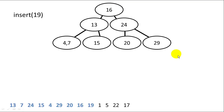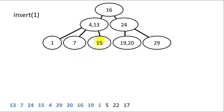Next we insert 19 — it's greater than 16 and less than 24, so it goes next to 20. We sort those and 19 is inserted. Then we insert 1, which goes on the far left next to 7. We sort those, but now we have 3 values, so we promote the middle value, 4, and split 1 and 7 into children. Next we insert 5 — it's between 4 and 13, so it goes with 7, and after sorting we're done.